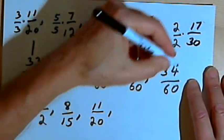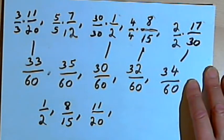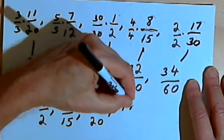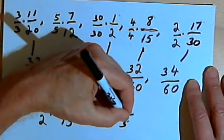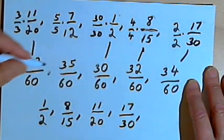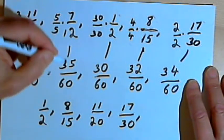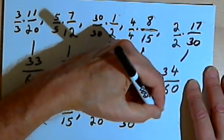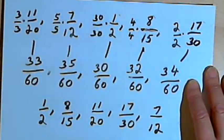I've got 34 over 60. That came from 17 over 30. And then my last fraction, the only one I've got left, is 35 over 60. And that came from 7 over 12.